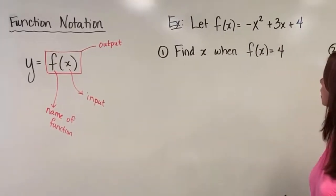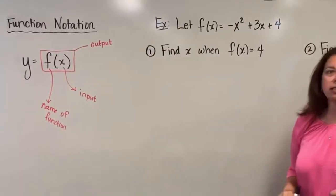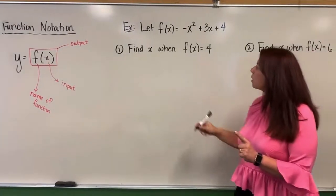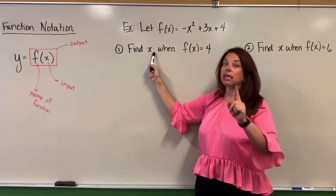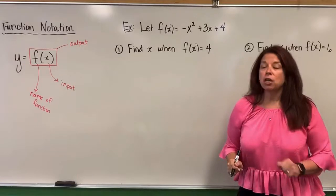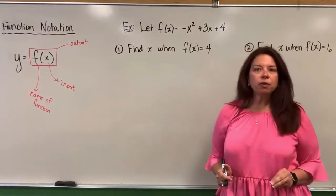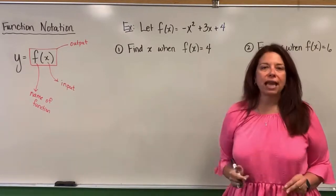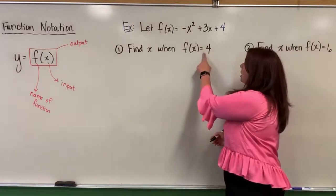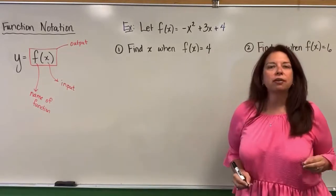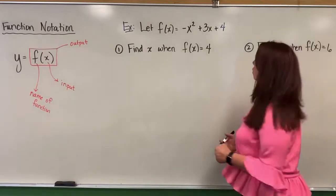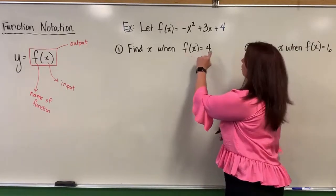So let's look at an example here. Let's say I have f of x equals negative x squared plus 3x plus 4. And in this case, what I want to do is I want to find x, the input, when f of x equals 4, the output. So basically what this is saying is, can you find for me the input when we know what the output is going to be?